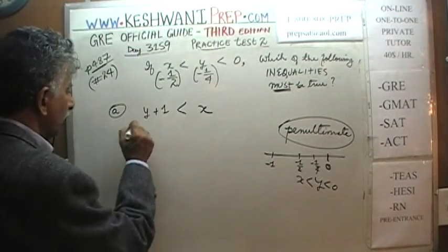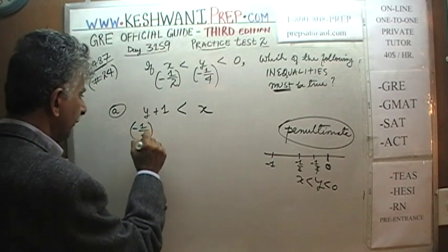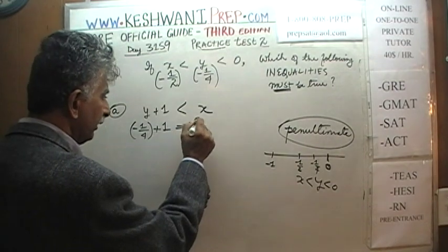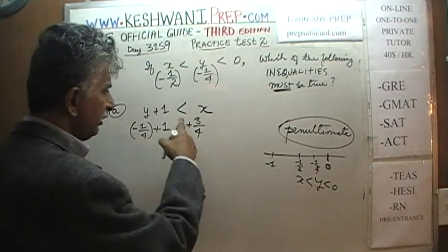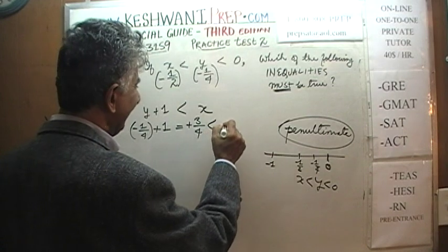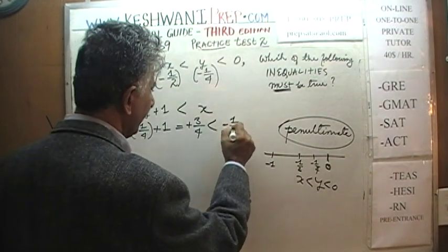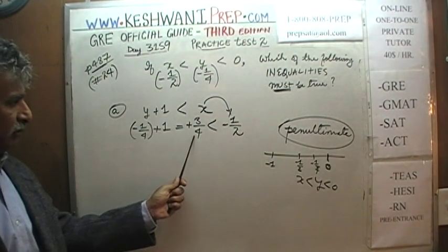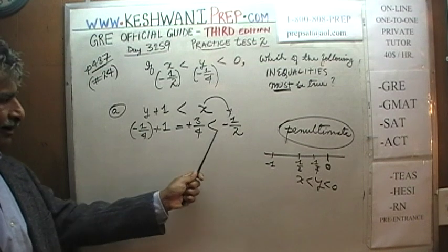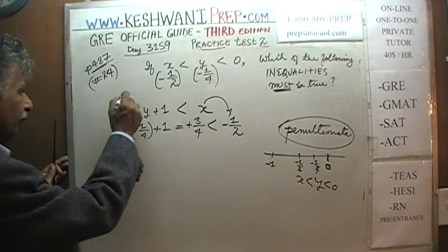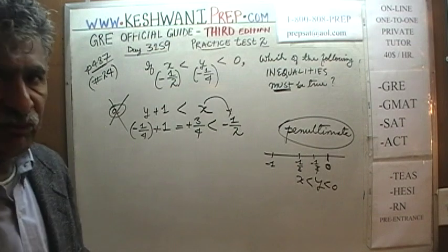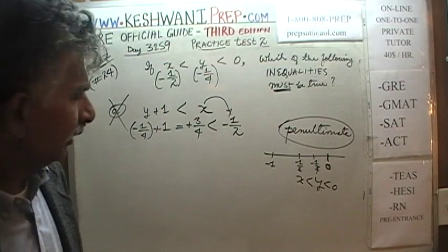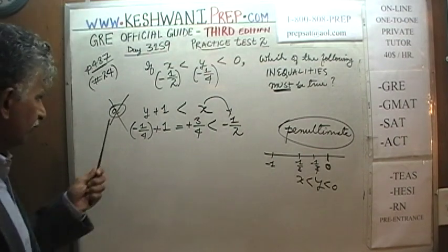The first inequality is y + 1 < x. With y = -1/4: negative one-quarter plus 1 equals positive three-quarters. Is positive three-quarters less than x, which is negative one-half? Of course not. If you find one instance where it doesn't work, it's ruled out — it doesn't matter if it works in 20,000 other situations.